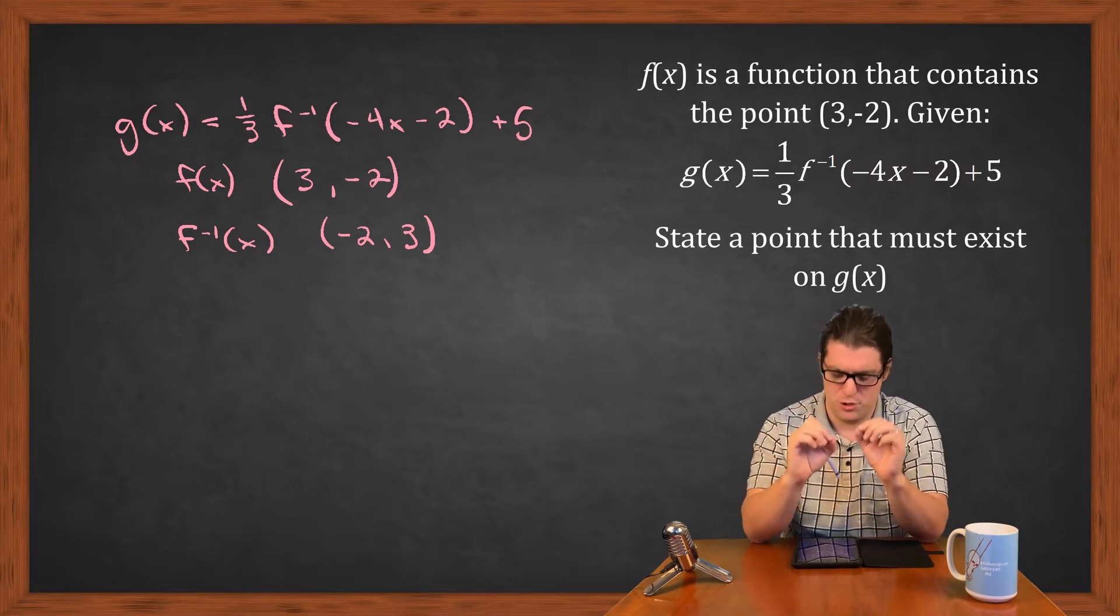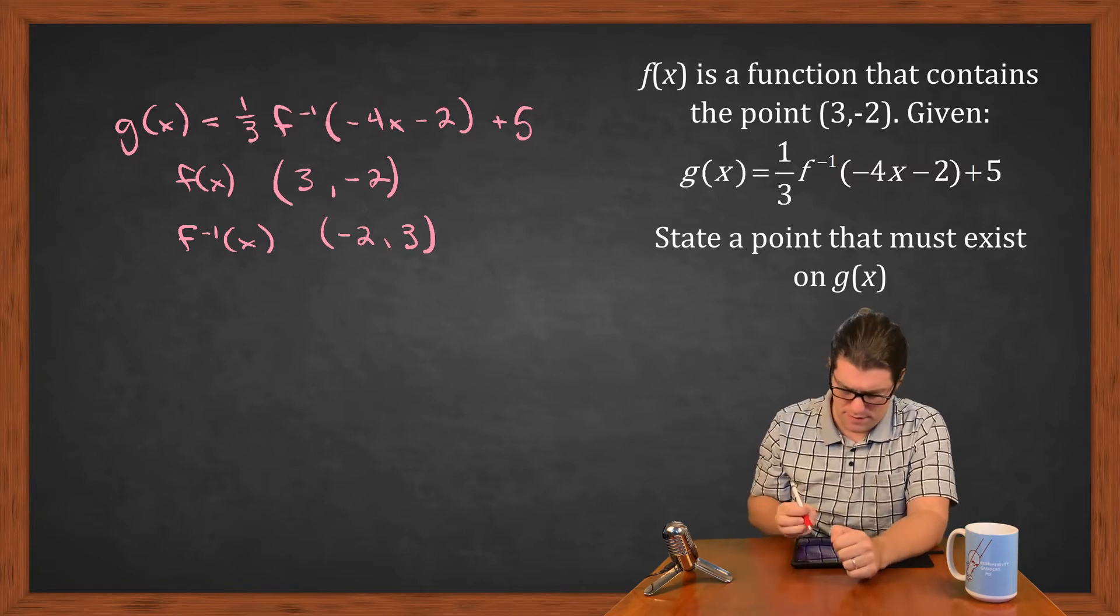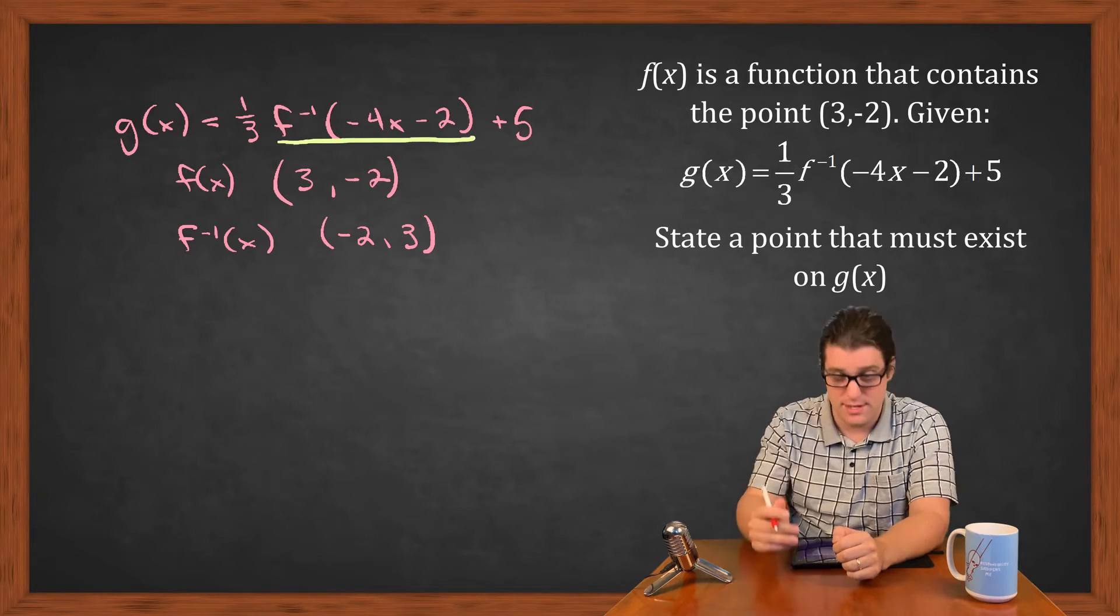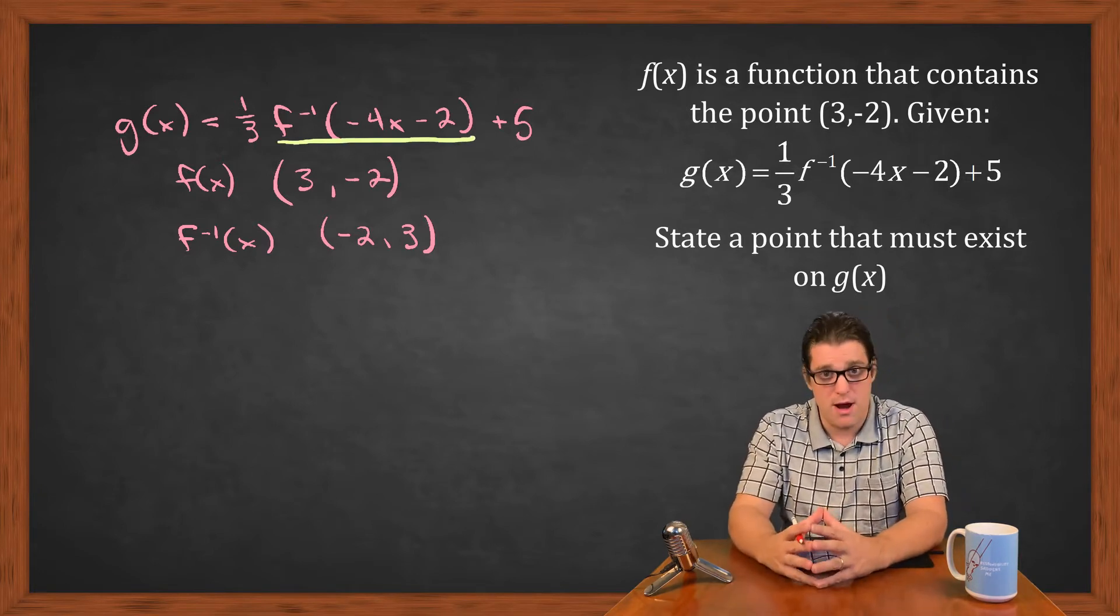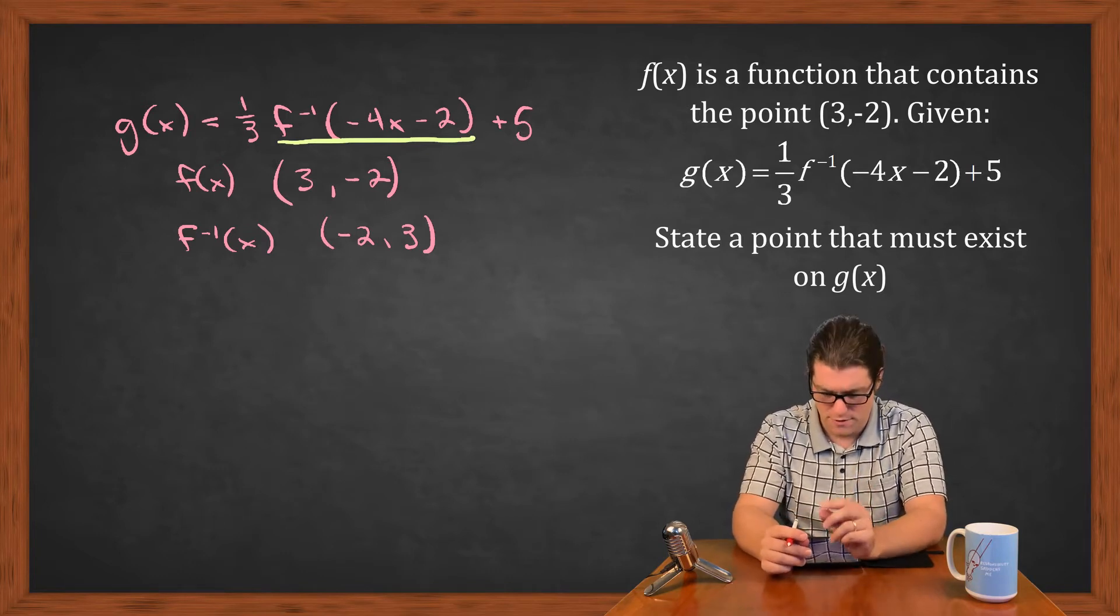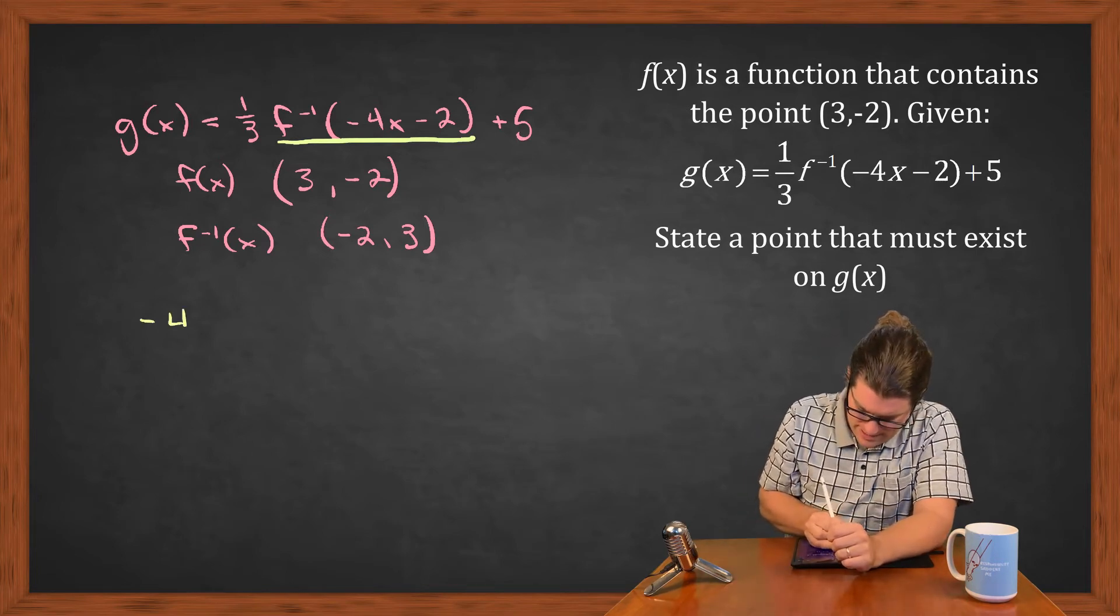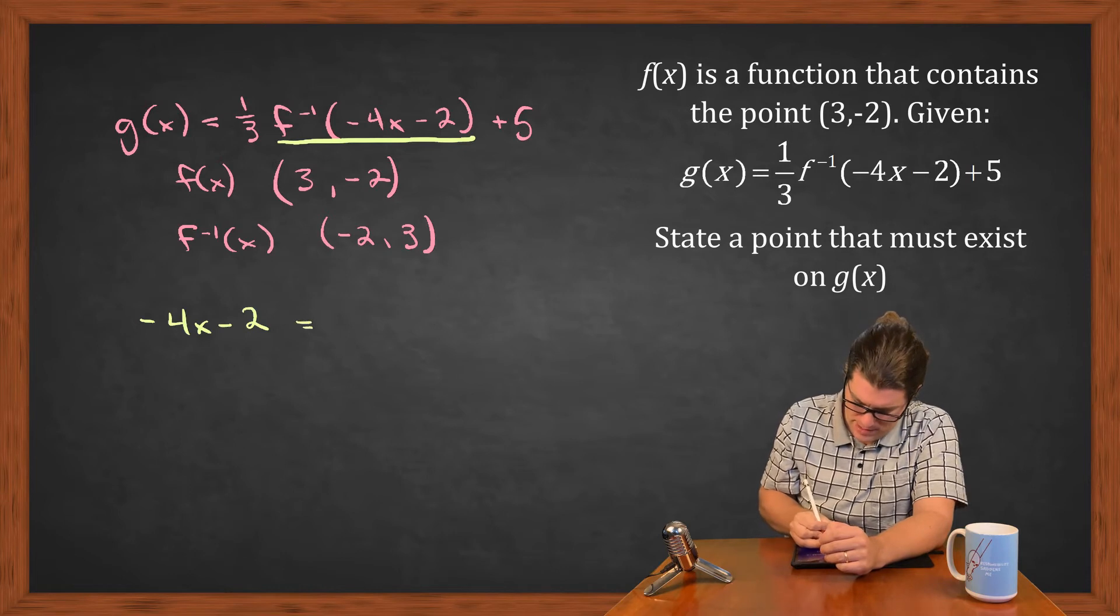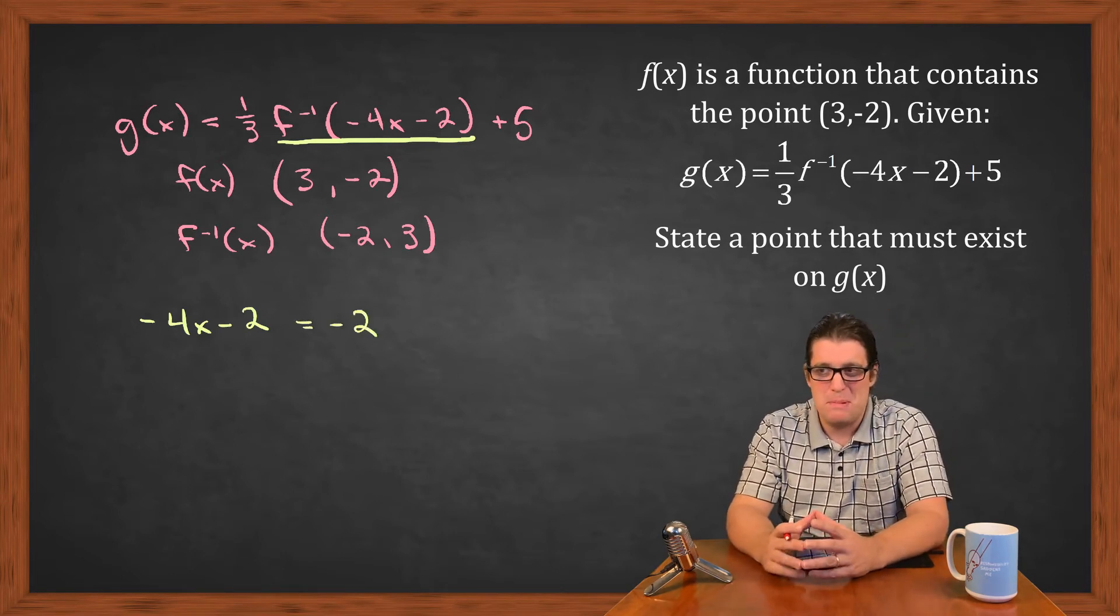Now if I were to bring your attention to where f inverse is in the big overall g function, it would be right there. So I underlined it, and so I know what happens when f inverse is acting on -2. So I'm going to set the inside part of this equal to -2 and see what x value would have to be happening in order for that to take place.